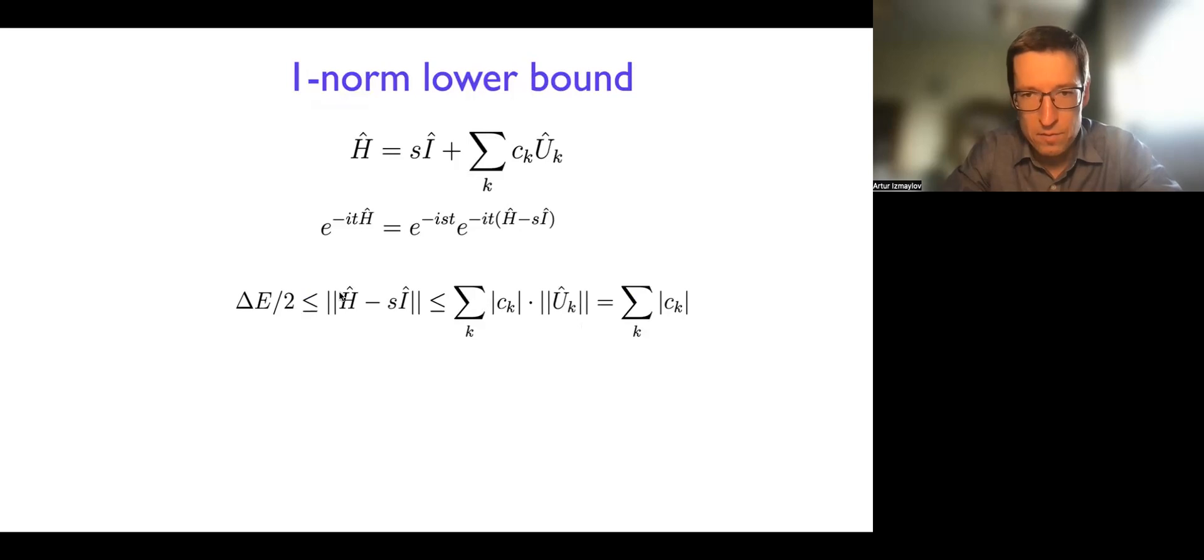Now, turns out, you can do it considering this sequence of inequalities. And let's start with this part where you consider the non-trivial part of the Hamiltonian where you subtract the identity, right? And so you look at the spectral norm that can always be upper bounded by triangle inequality with the spectral norm of the unit being one, you get the one-norm of the coefficients. And so one-norm of coefficients is always going to be bigger than this spectral norm of H minus S.